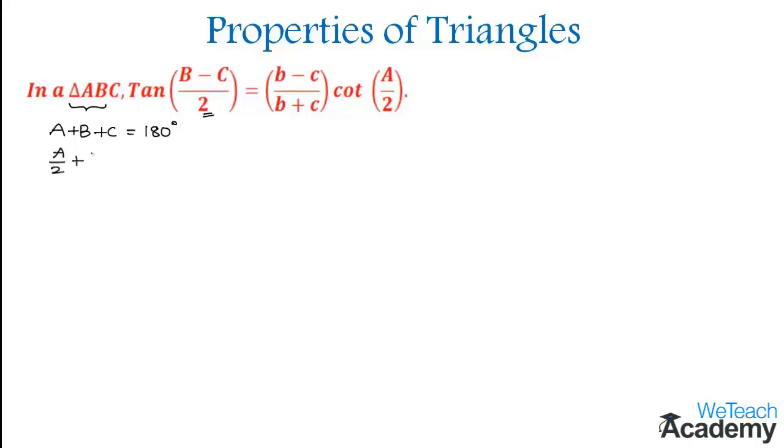We get A by 2 plus B by 2 plus C by 2 equals 180 degrees by 2, which is 90 degrees. Let us name this as equation 1.